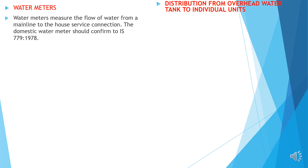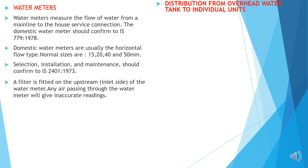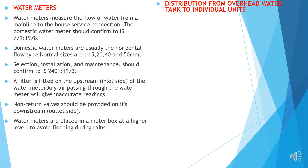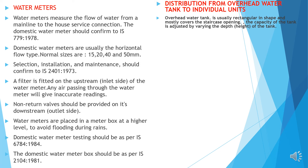Water meters: the water meter measures the flow of water from a main line to the house service connection. The water meter should confirm to IS-779. Domestic water meters are usually the horizontal type; normal sizes range from 15 to 50 mm. Selection, installation and maintenance should conform to IS-2401. A filter is fitted on the upstream (inlet side) of the water meter. Any air passing through the water meter will give inaccurate readings. A non-return valve should be provided on the downstream (outlet side). Water meters are placed in a meter box at a higher level to avoid flooding during rains. Testing should be as per IS-6784 and the domestic water meter box should be as per IS-2104.